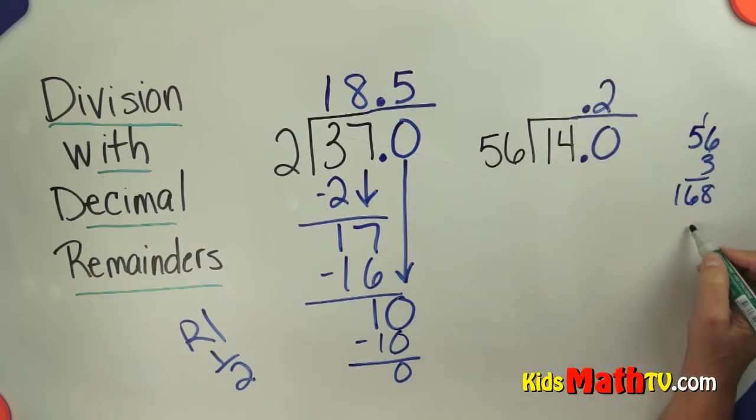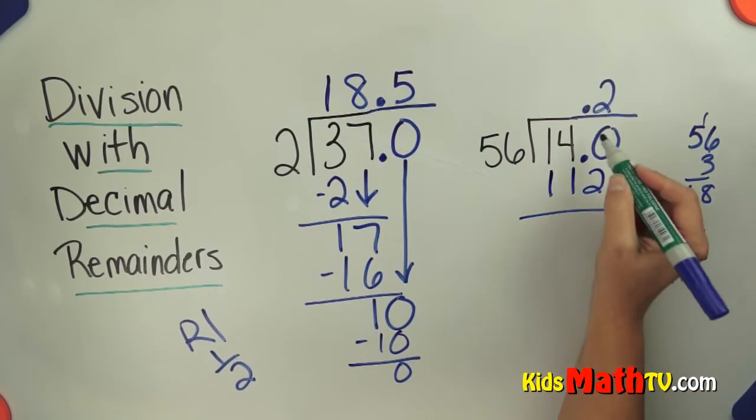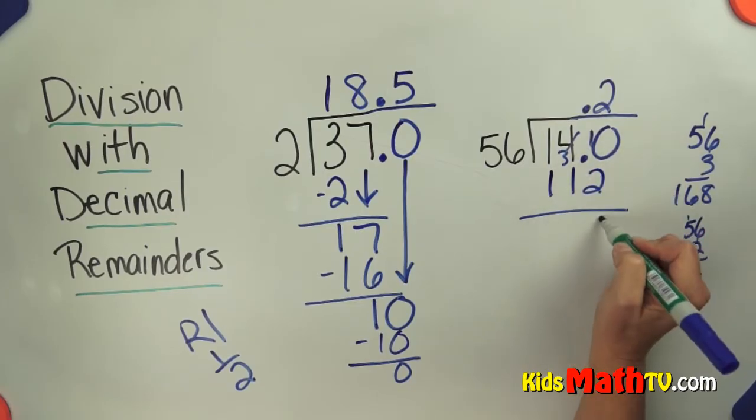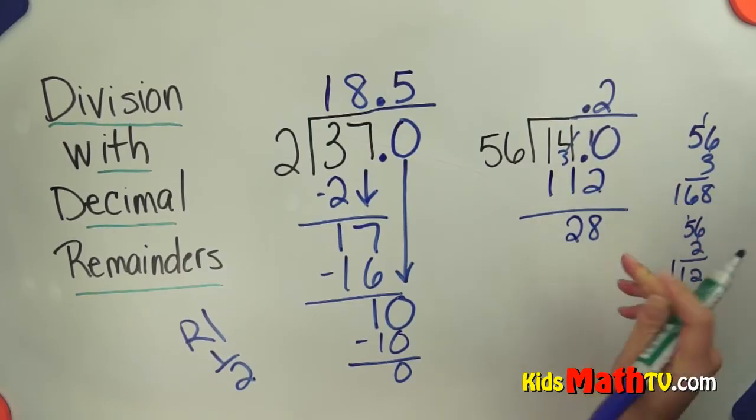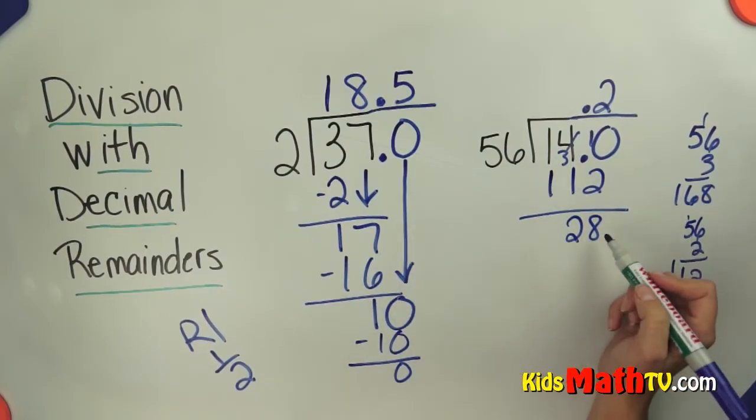2 times 56 is 112. Now I subtract, that's 8 and that's 2. When I subtract, it's still smaller than my divisor, so I'm fine.